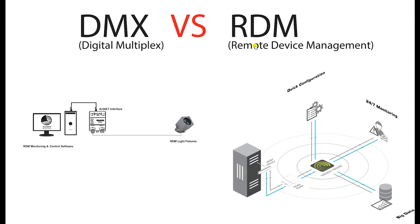Hi everyone, today we are going to talk about DMX and RDM. Everyone knows DMX — we use a lot of DMX systems for light fittings in dynamic projects where we have RGB, to dim the lights, to chase, or for any other programming. RDM is mainly used to manage systems; it's more than DMX. Today we are going to talk about what is the difference between DMX and RDM and what additional features we get from RDM.